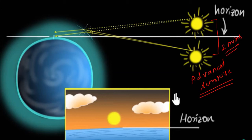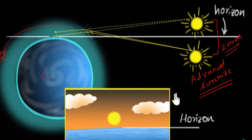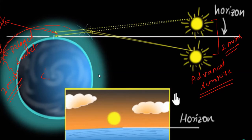The same phenomenon occurs when the Sun sets. When the Sun goes below the horizon, the light rays will bend and come to you, so you will still view the Sun even though it has gone below the horizon. This is called delayed sunset. For how long? Again, two minutes. So even though the Sun has set, we can still see the image of the Sun. Two minutes before sunrise and two minutes after sunset.